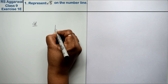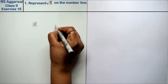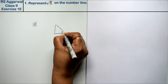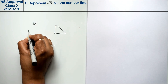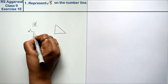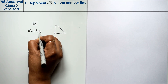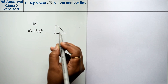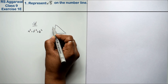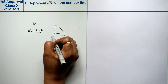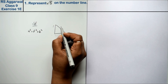We have to know the theorem of Pythagoras: h² equals p² plus b². Here, this was our base, this was our perpendicular, and this was our hypotenuse.